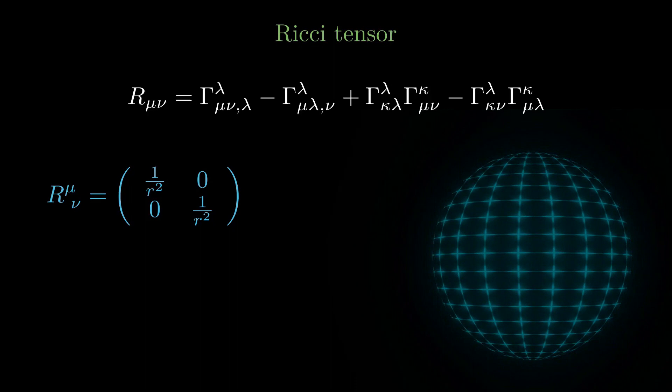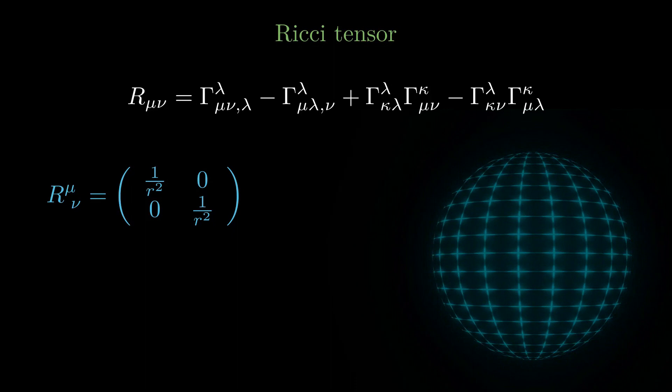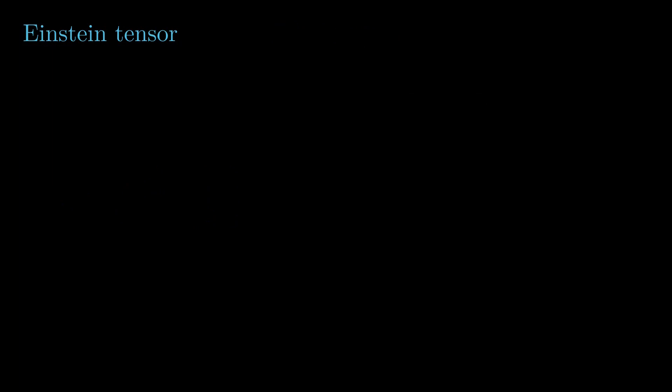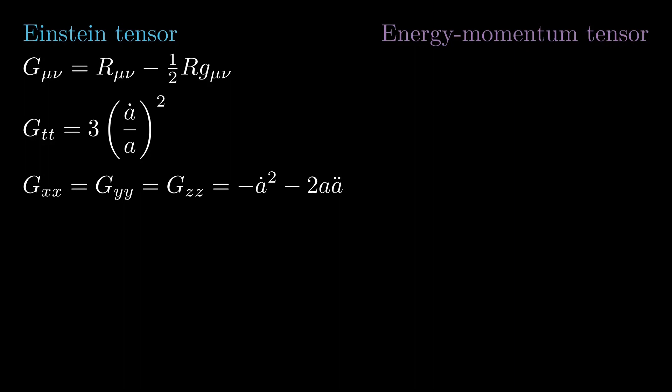The Einstein tensor on the left-hand side of Einstein's equations is a combination of the Ricci tensor and its trace. It indicates a non-vanishing curvature of the spacetime which must be balanced with a corresponding energy-matter content that fills the universe. The time-time component of Einstein's equations exactly corresponds to the Friedman equation which was used to calculate the age of the universe.